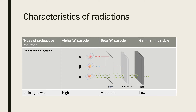Let's look at the characteristics of these radiations. For the alpha particle, its penetration power can be shielded using paper. For the beta particle, it can be shielded using aluminium. For the gamma particle, it can penetrate through paper, aluminium, and lead. Regarding ionizing power: alpha particle has high ionizing power, beta particle has moderate ionizing power, and gamma particle has low ionizing power.